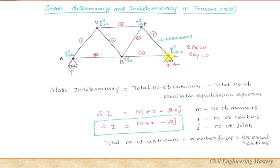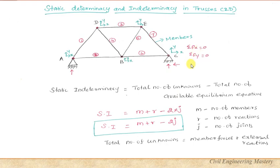The total number of available equilibrium equations is represented as 2j. For a 2D truss, at each joint we have two equilibrium equations: ΣFx = 0 and ΣFy = 0. This truss has 5 joints, each with two equations. Therefore, static indeterminacy = m + r − 2j.